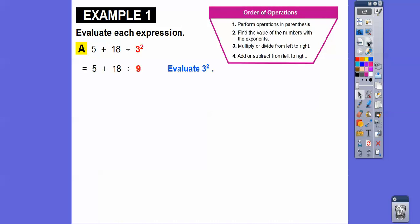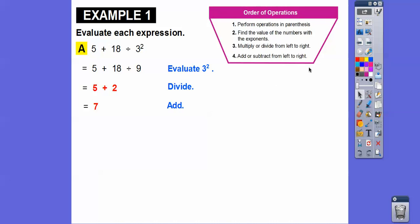The next step says multiply or divide. We don't do the addition until the very last. So the next thing we do is 18 divided by nine, which is two. Now we can add: five plus two is seven. If you did it in a different order you won't get the correct answer of seven — that's why we have to have a rule so everybody gets the same answer.